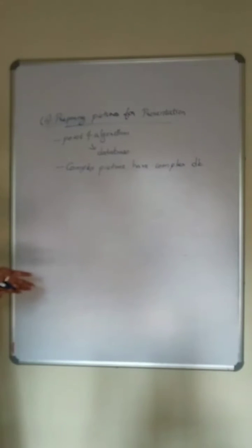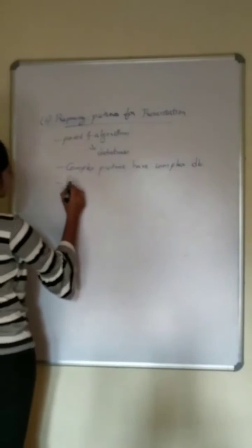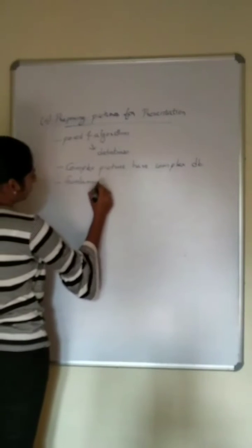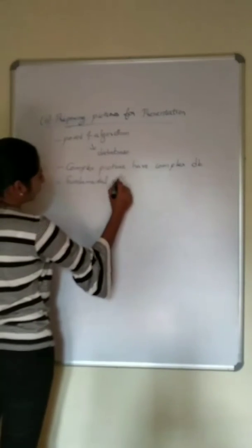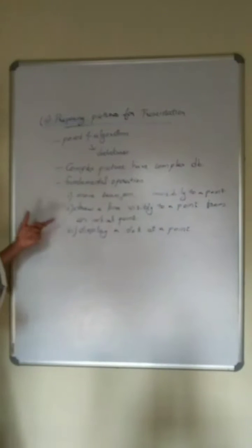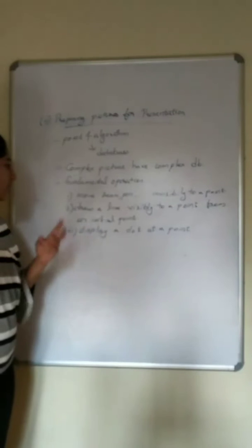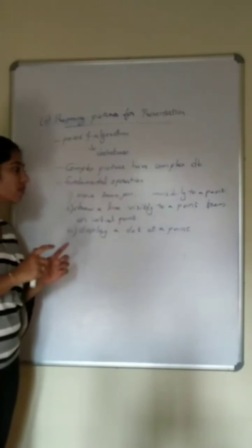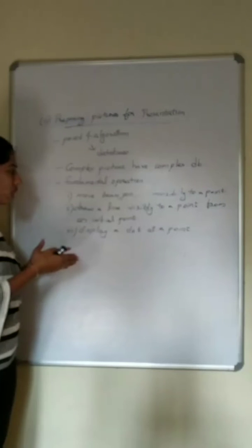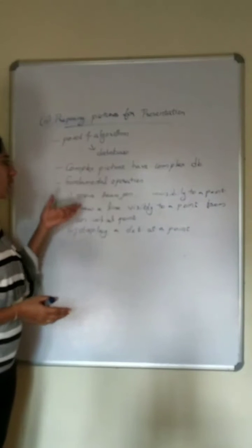Generally, the database will have some data structure in it. The fundamental operations are: first, move the pen or beam invisibly to a point; second, draw a line visibly to a point from the initial point; and third, display a dot at that point. These are the fundamental operations when considering a point.